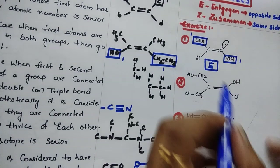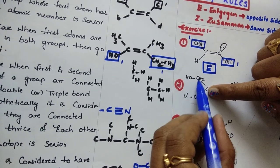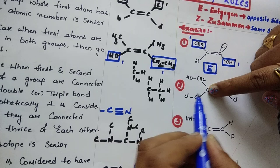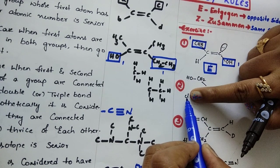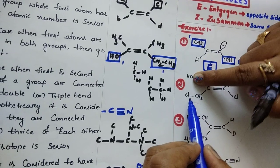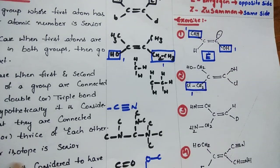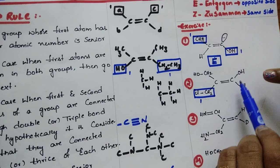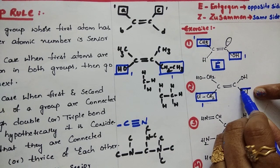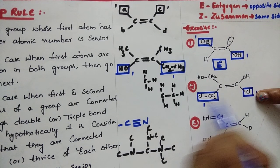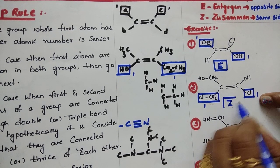Example 2: To this carbon, CH2 and CH2 are linked — the linkage is the same. Then according to rule number 2, you should see the next priority atoms. Here one group has Cl and the other has oxygen. Chlorine has atomic number 17, oxygen has atomic number 8. So more priority goes to chlorine — this is the senior group. Chlorine and OH: chlorine is having more priority. Both priority groups are on the same side, so it is Z nomenclature.